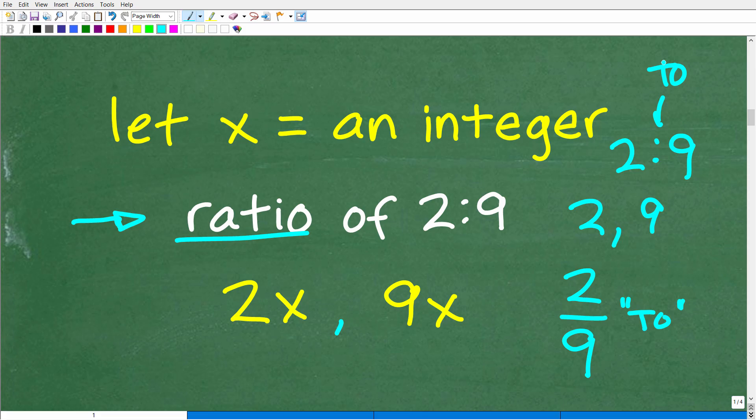But basically, if you had two people, let's say we had two cars and nine trucks, right? We have a total of 11 vehicles, two cars, and nine trucks. The ratio between cars and trucks would be two to nine. So we're making a comparison. We could write that as a fraction like this as well.